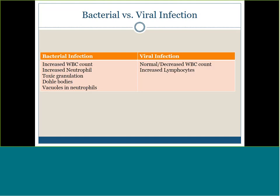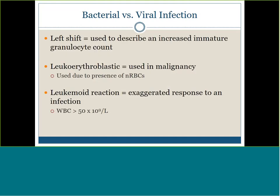Viral infection normally shows a normal or decreased white count with an increase in lymphocytes. Key terms: left shift means increased immature granulocytes — seeing bands, metamyelocytes, cells that shouldn't be there. Leukoerythroblastic is a left shift plus nucleated red cells — both immature granulocytes and immature red cells together. This term is commonly used with leukemias and malignancies.